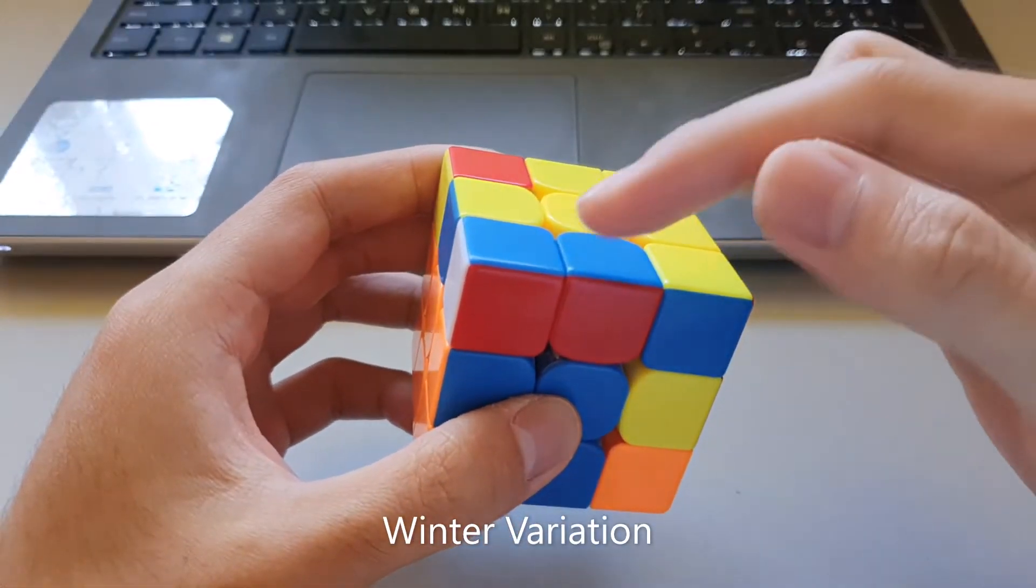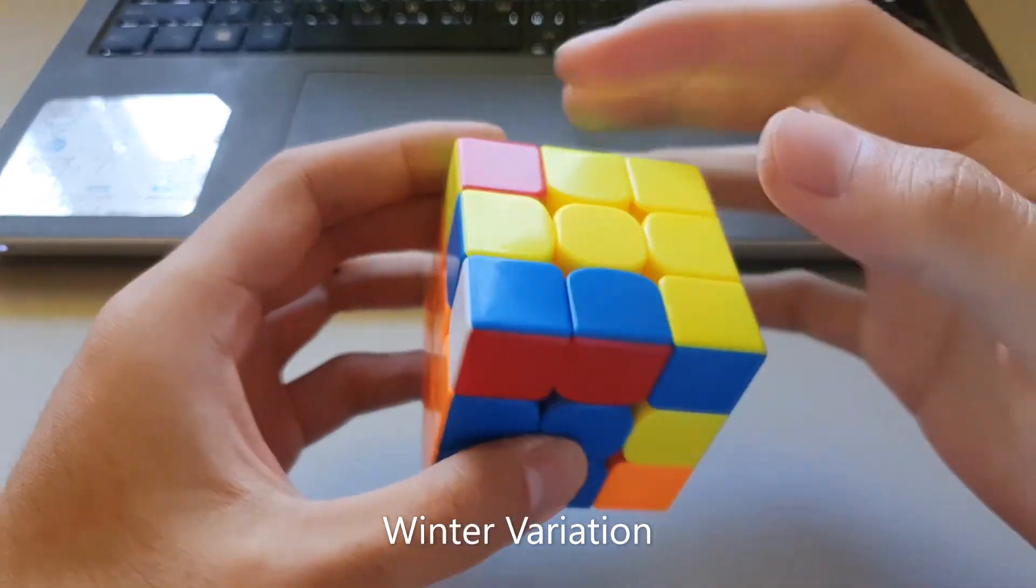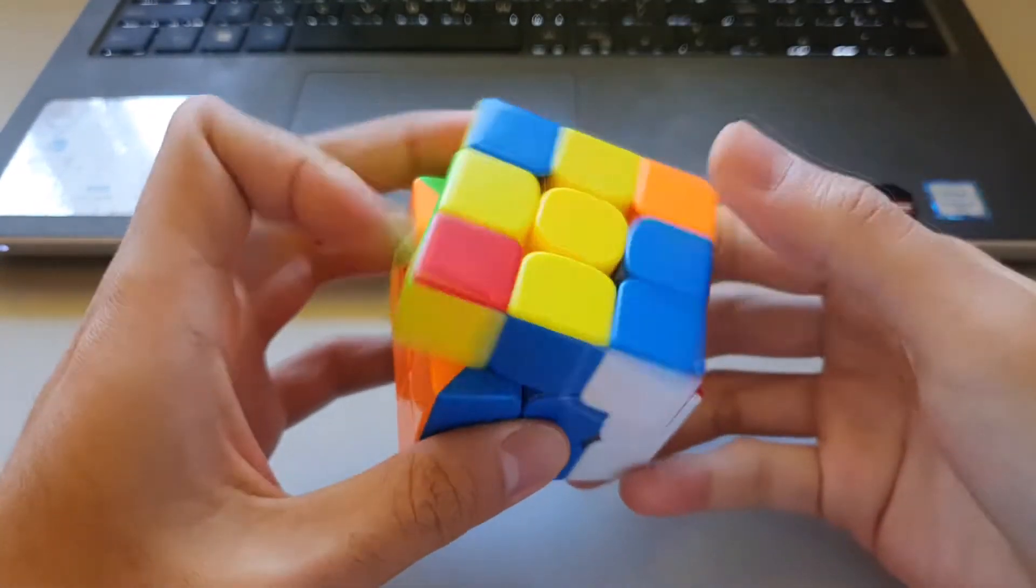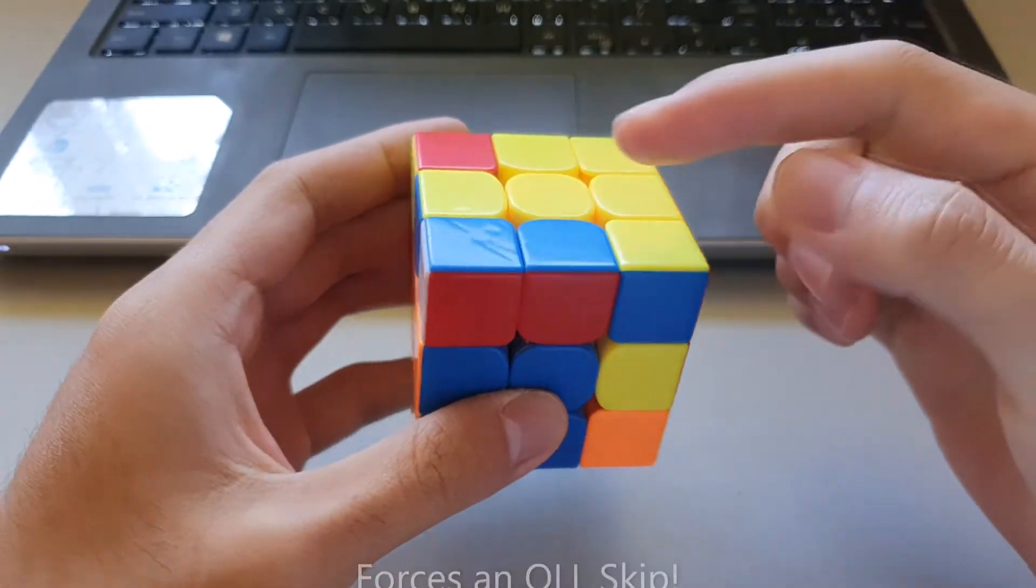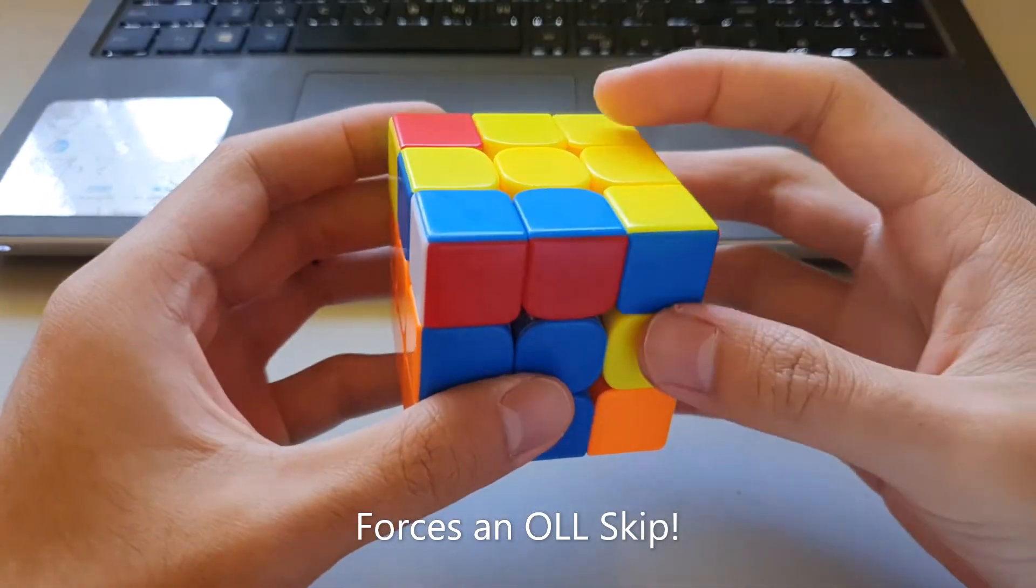Winter variation is for when you get to the last F2L pair and it's in this attached case and all of your edges are oriented. So instead of inserting normally and doing the regular OLLL, what winter variation does is it inserts the F2L pair slightly differently to force an OLLL skip.